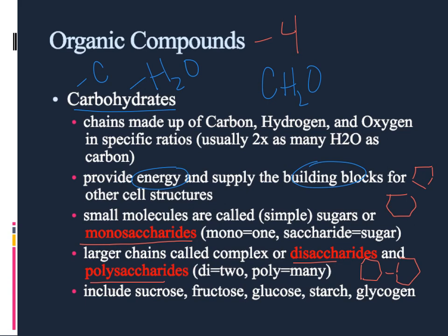Some carbohydrates you might have heard of: sucrose — that's table sugar; fructose — fruit sugar; glucose — that's animal sugar, the sugar found in your blood and body for energy. And starch are really big chains — a good example of a polysaccharide — that you would find in bread or pasta, for example.